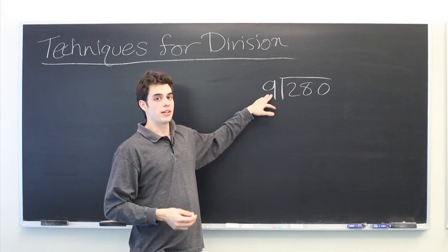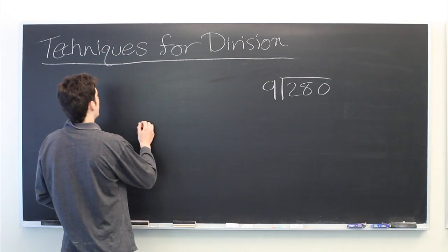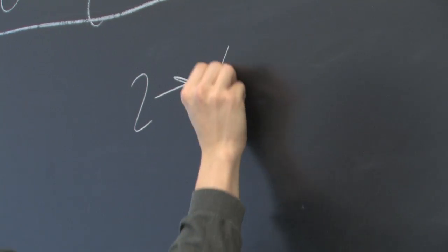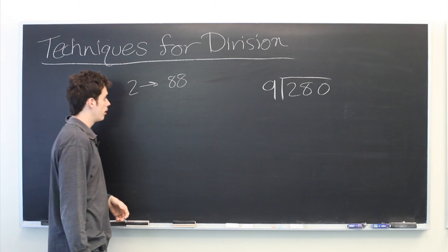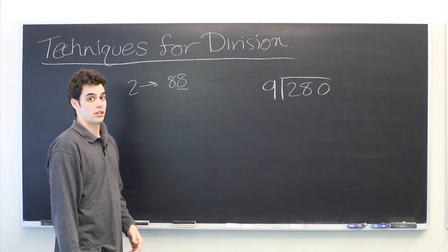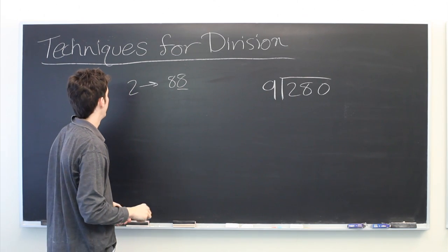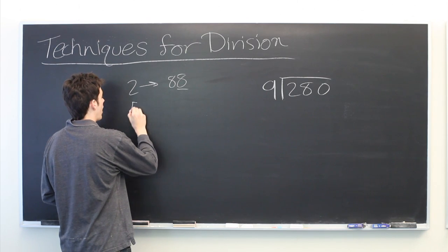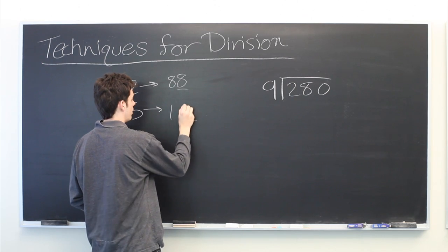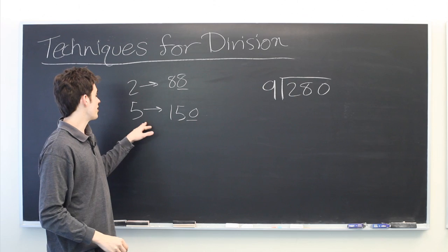Every number has a different divisibility rule associated with it. For example, if you wanted to check if 2 can go into a number, such as 88, one simply needs to look at the last digit. If the last digit is even, then 88 is divisible by 2, which it is. For 5, for example, one simply has to look at the very last digit again. And if it is a 0 or a 5, then the number is divisible by 5.